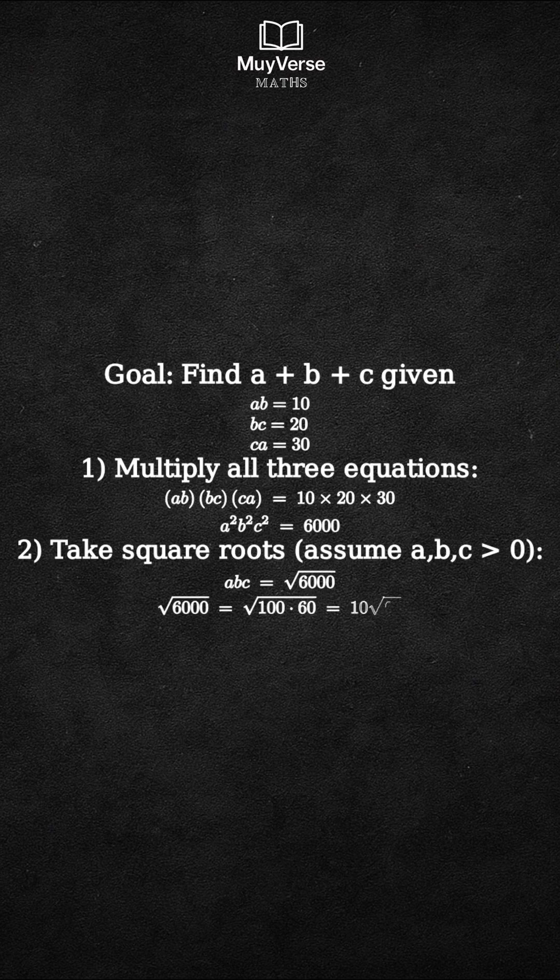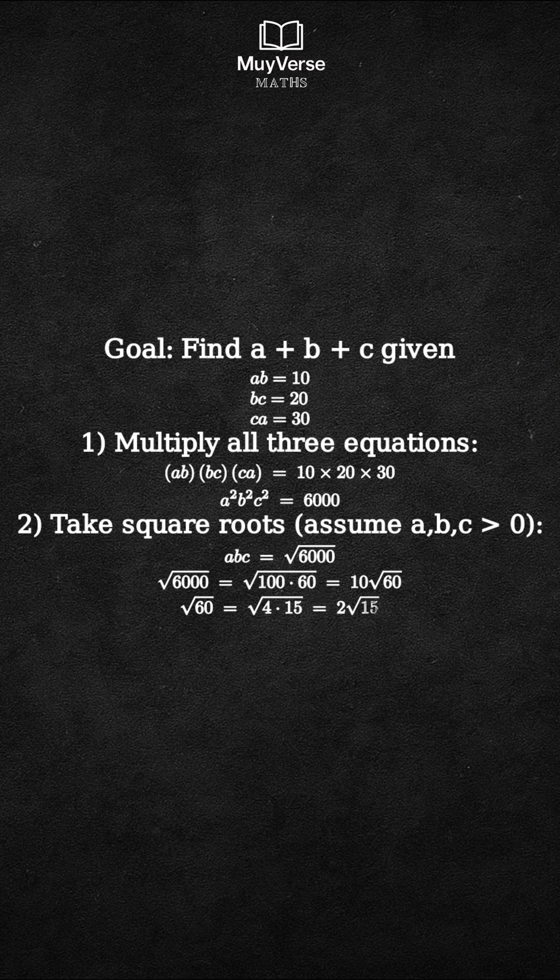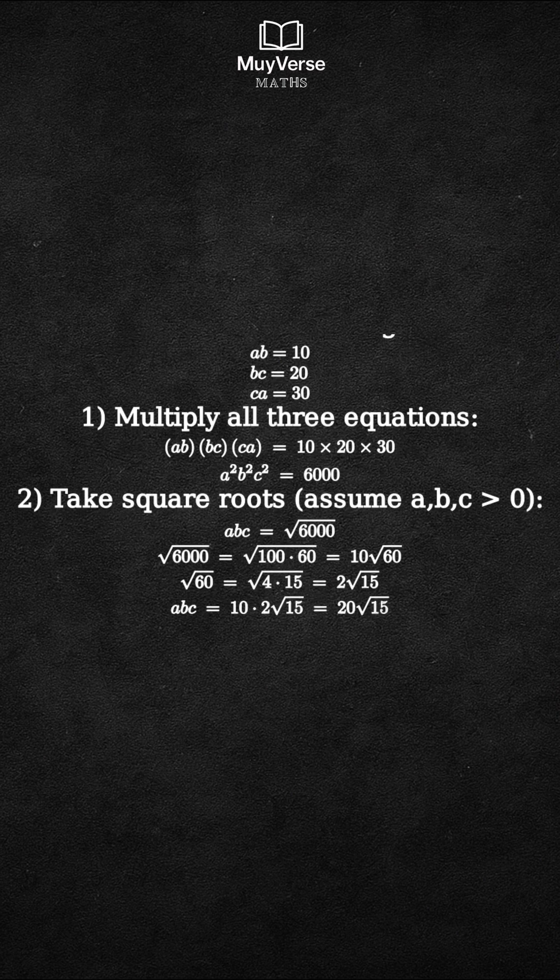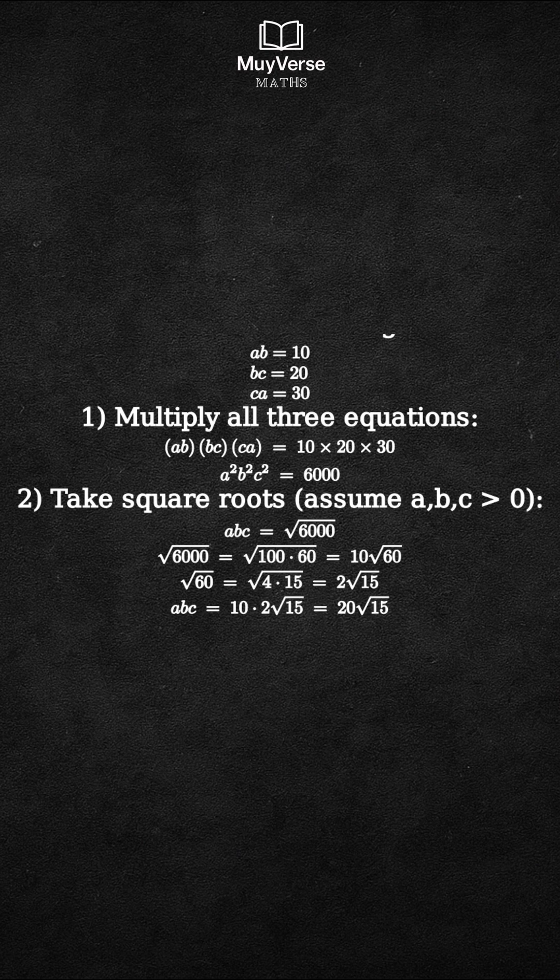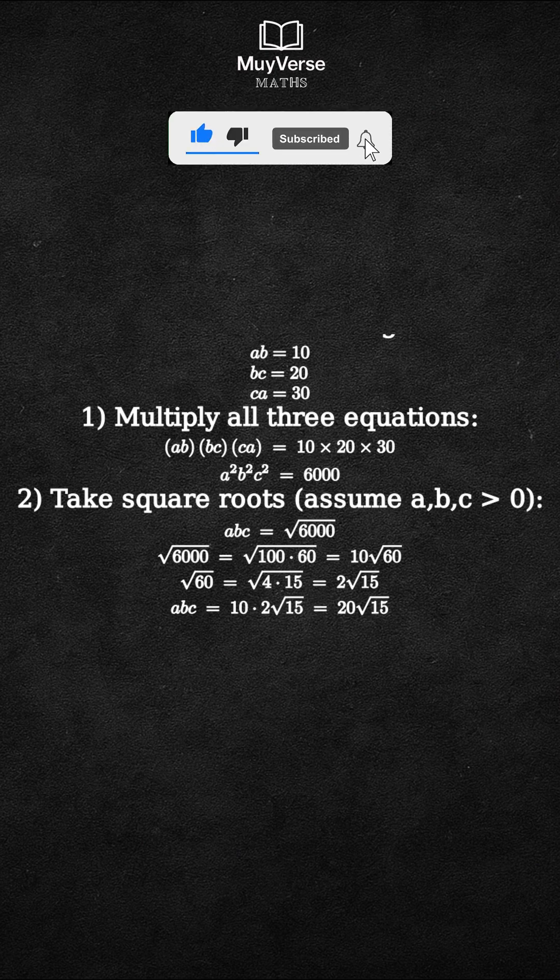Now, simplify the square root of 6,000. Write 6,000 as 100 times 60. So the square root of 6,000 equals the square root of 100 times 60, which is 10 times the square root of 60.